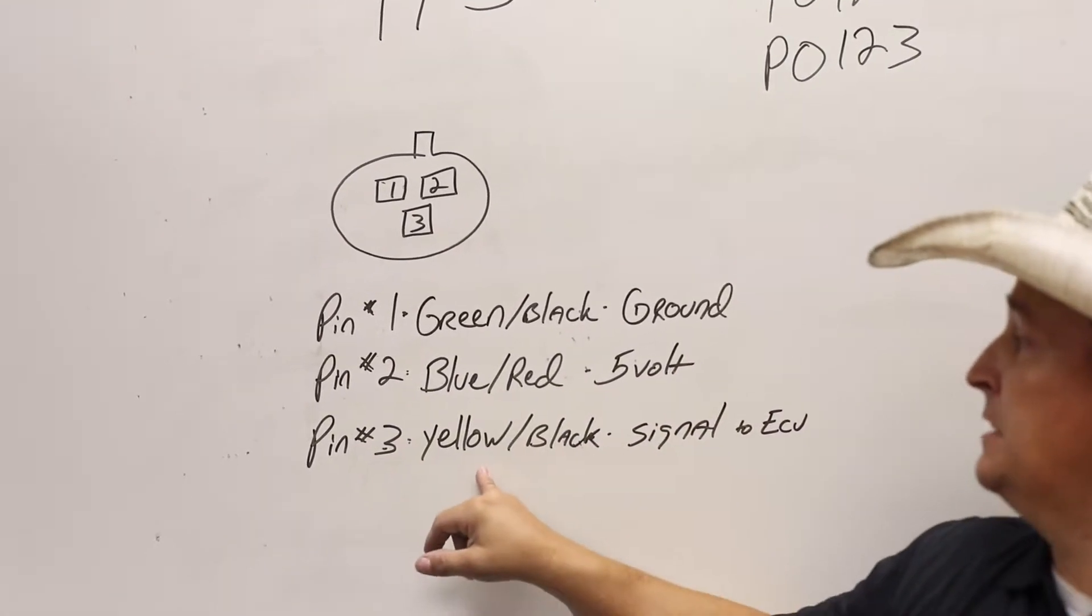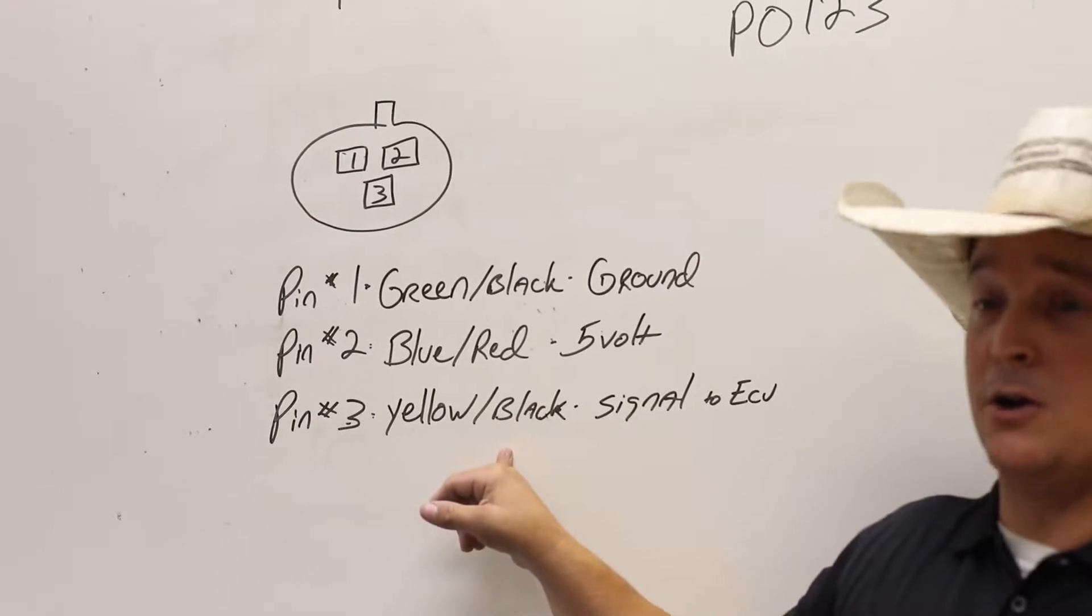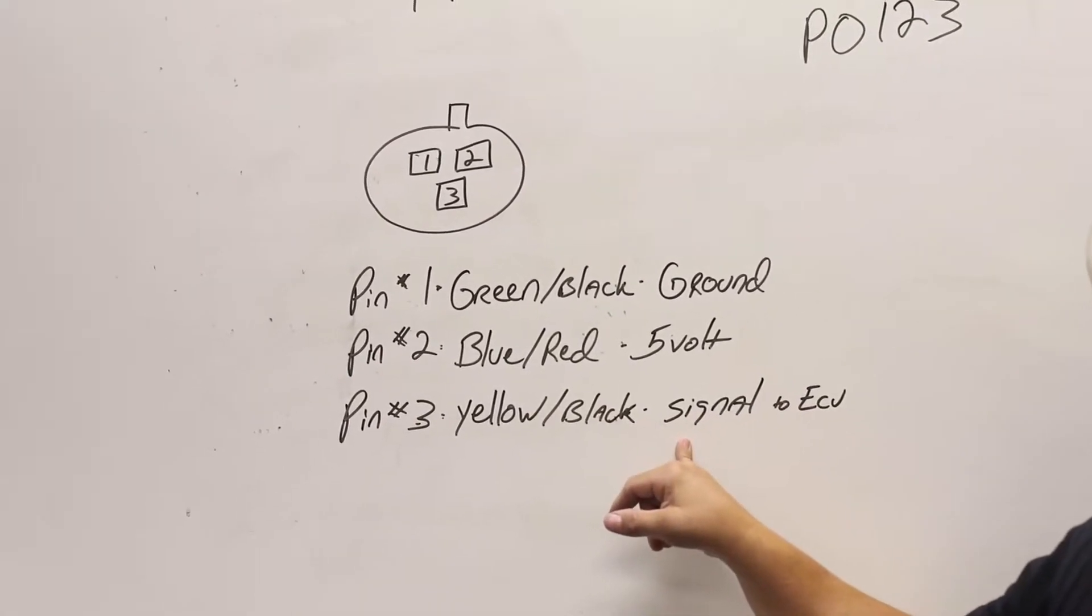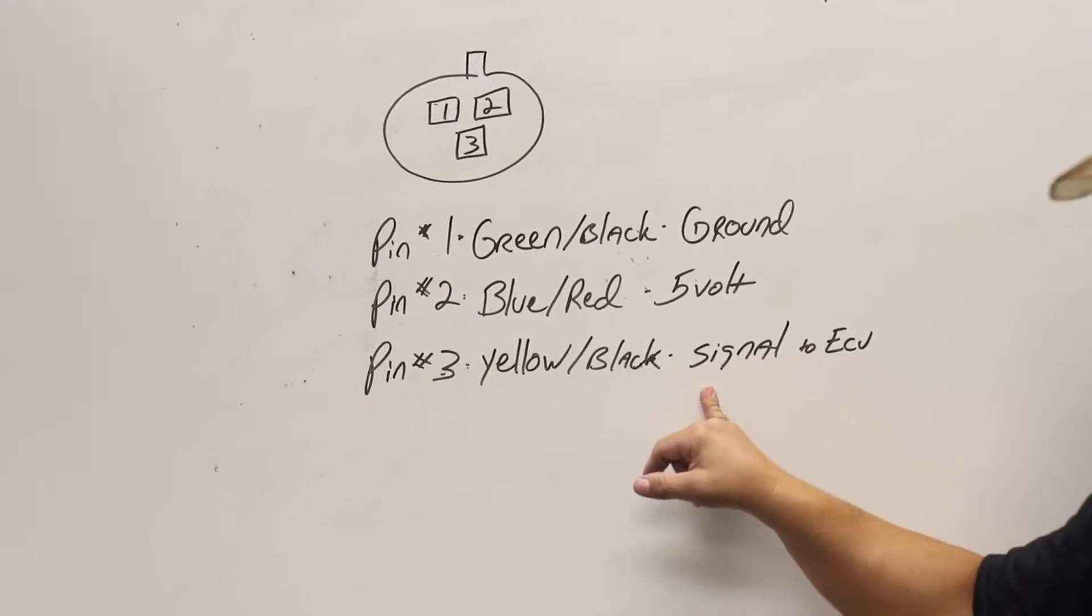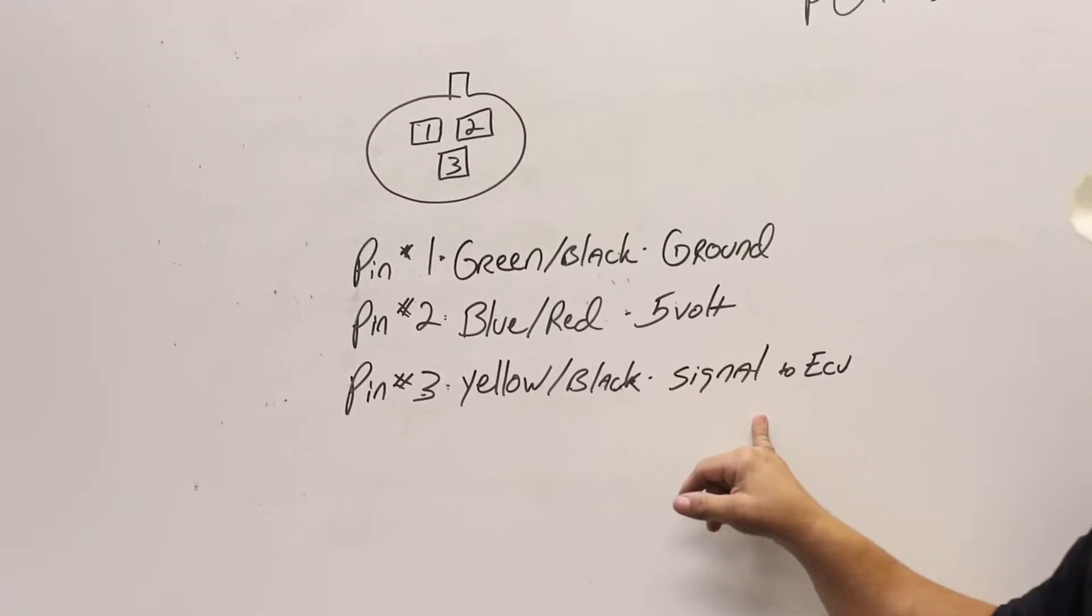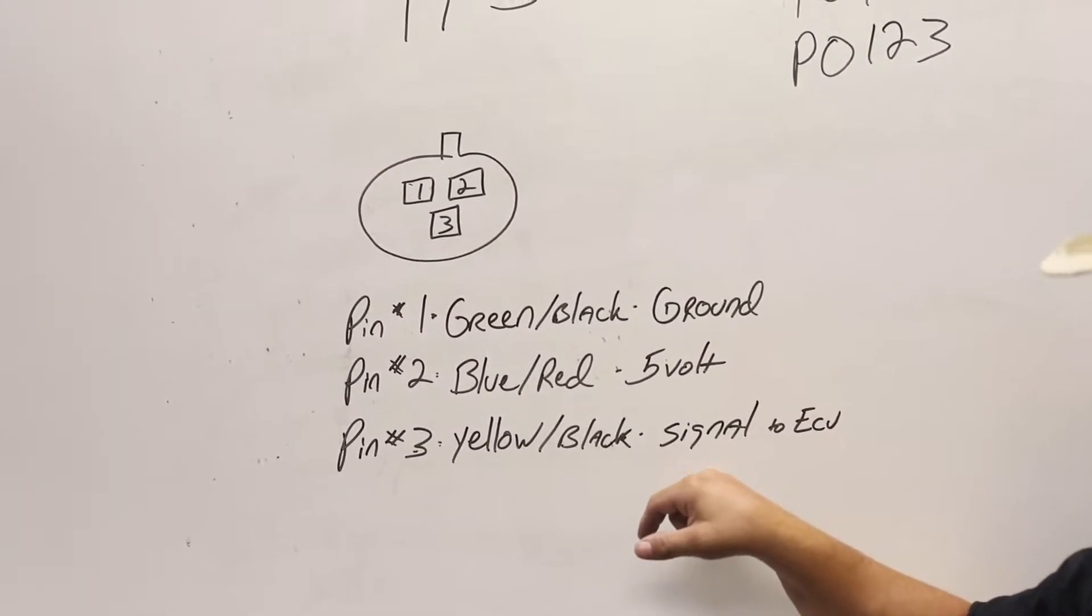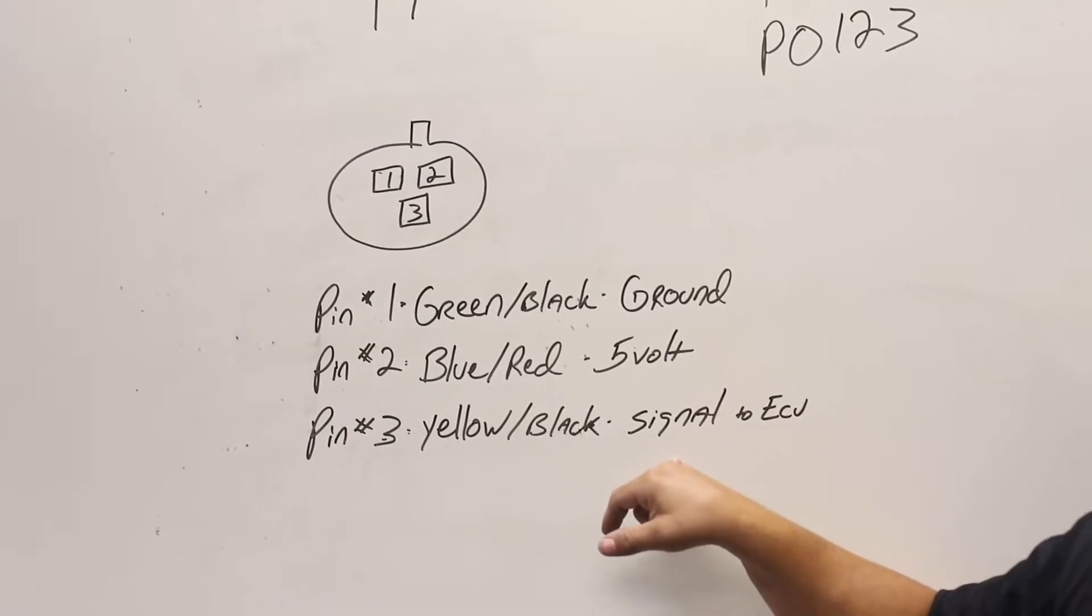Pin number three is a yellow wire with a black stripe. That is your signal out of the throttle position sensor back to the ECU. This is going to be a voltage reading back to ECU.